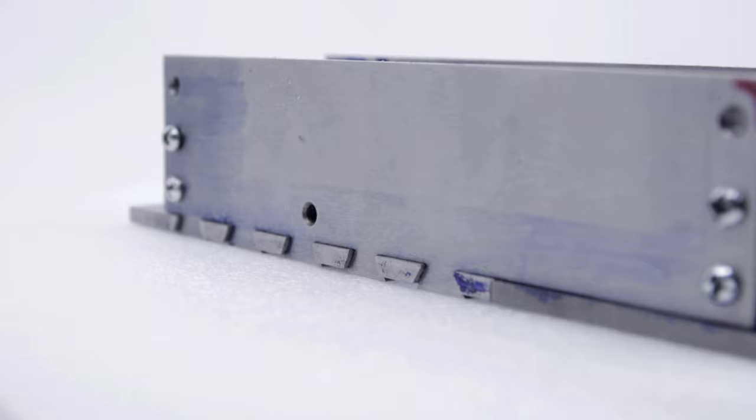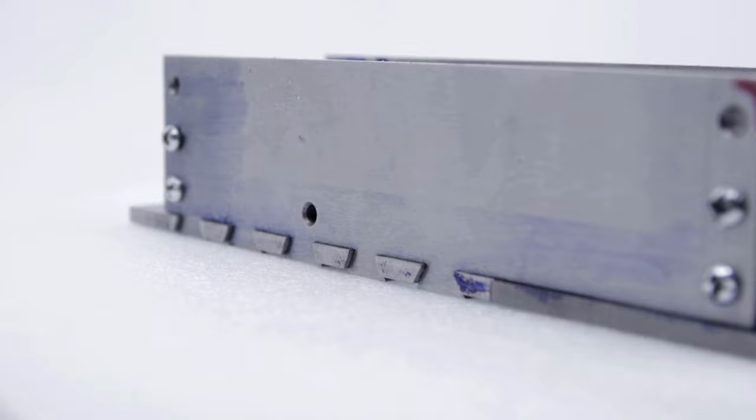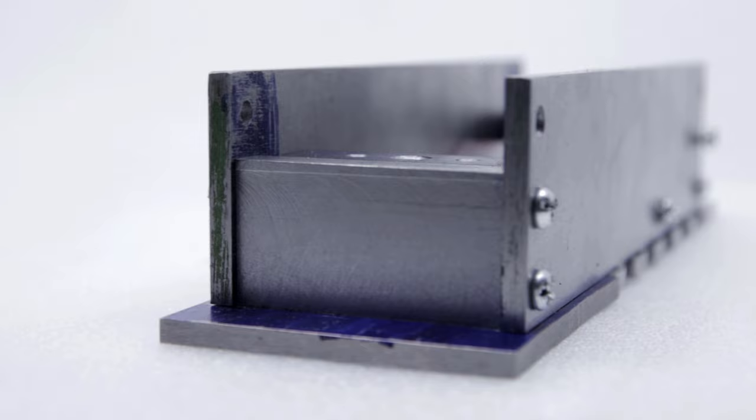Those are just temporary. This should give you a general idea of the shape. Everything is oversized so I can file it all true after final assembly.